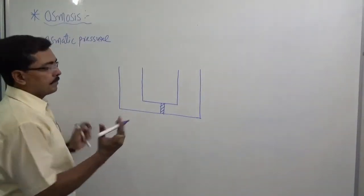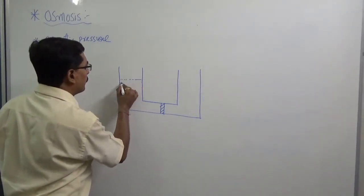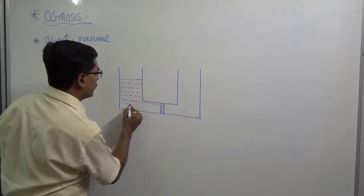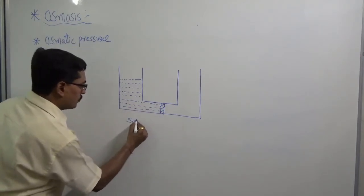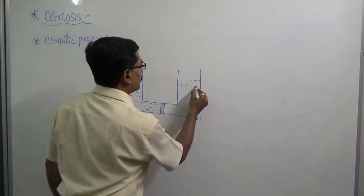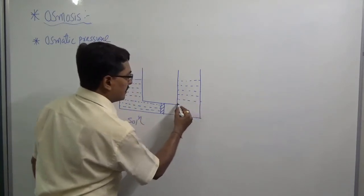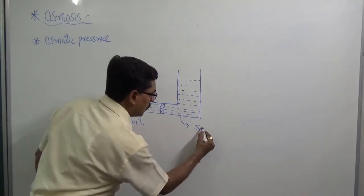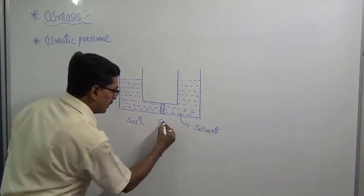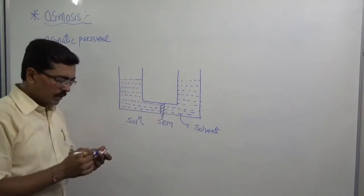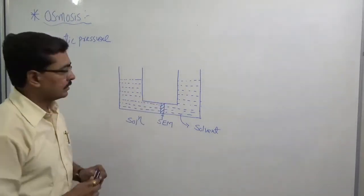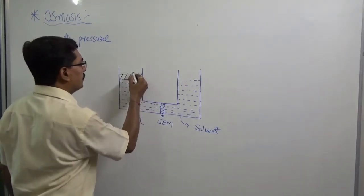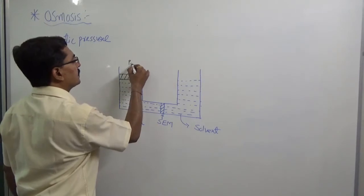Now we want to know about osmotic pressure. To understand osmotic pressure, we will perform the same experiment in a different way. I have taken two different solutions — one side a pure solvent and another side a solution — both kept in contact through a semi-permeable membrane labeled SEM. On both sides I have put a movable piston creating atmospheric pressure PATM.